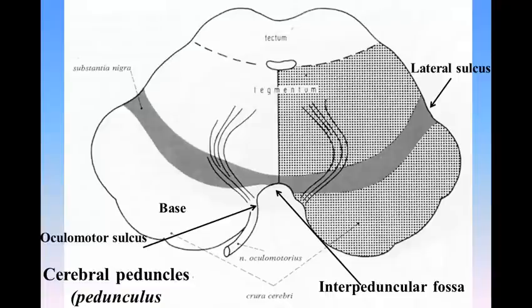Structure of the Cerebral Peduncles. On transverse section, each peduncle is seen to consist of a dorsal and a ventral part separated by a deeply pigmented lamina of gray substance termed the substantia nigra. The dorsal part is named the tegmentum; the ventral, the base or crusta. The two bases are separated from each other, but the tegmenta are joined in the median plane by a forward prolongation of the retae of the pons. Laterally, the tegmenta are free. Dorsally, they blend with the corpora quadrigemina.